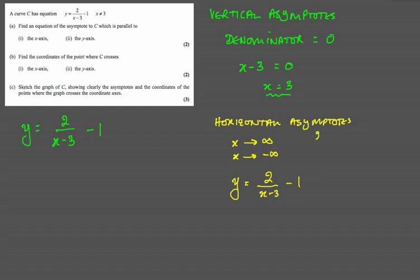So y equals 2 over x minus 3 minus 1. Now, as x tends to a very large value, then 2 over x minus 3, minus 3 doesn't do an awful lot, but 2 over a very large value starts to head towards 0, which means that for very large values, 2 divided by x minus 3 becomes very small, and increasingly, y will start to look like minus 1. So we have our horizontal asymptote and our vertical asymptote here.